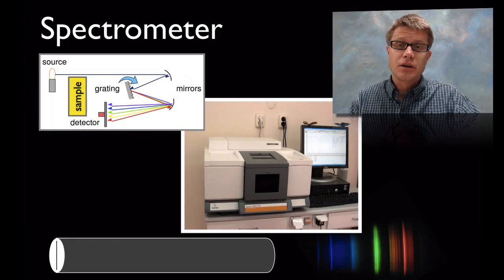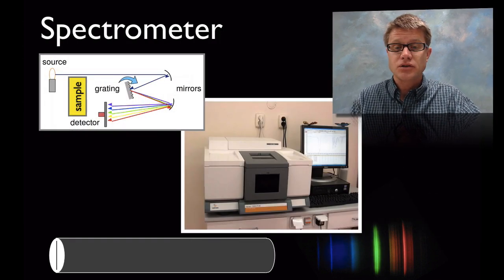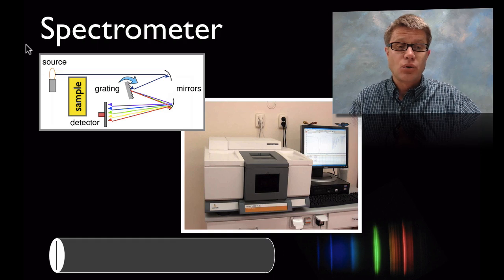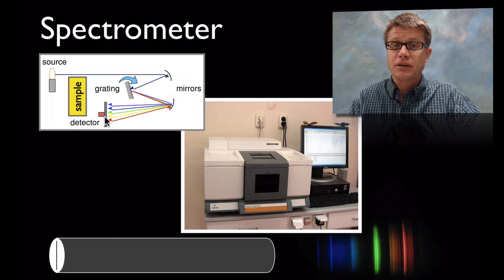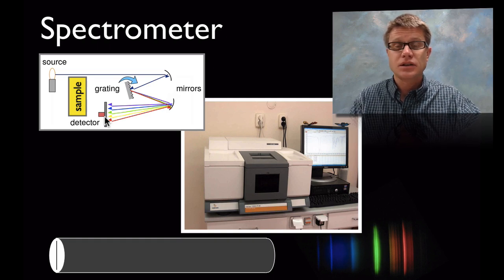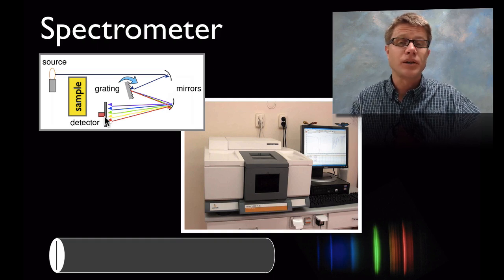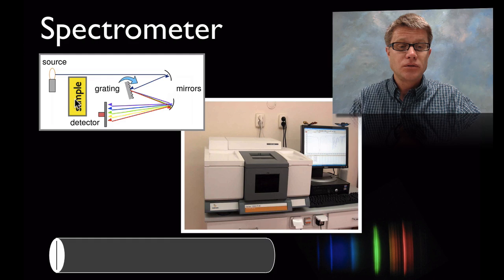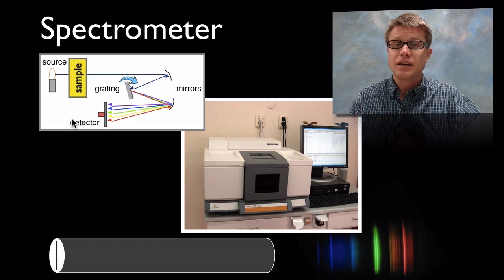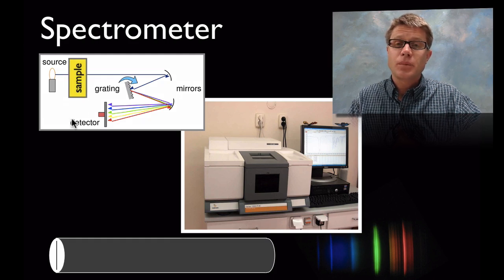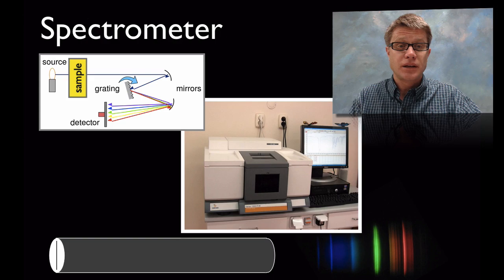A spectrometer is simply a sophisticated spectroscope. You have a source with light on one side, then a grading, and the detector is now a camera - like a digital camera picking up more of the light we can't see. You take your sample and slide it in. Different spectrometers allow us to see different things.